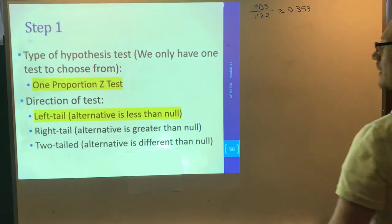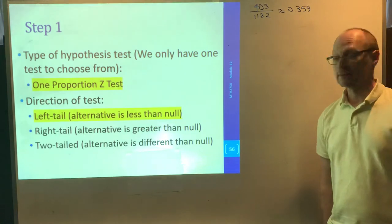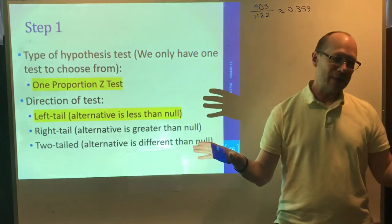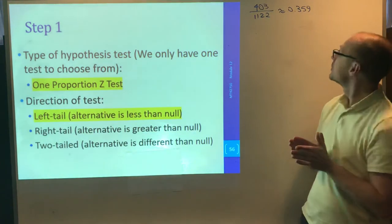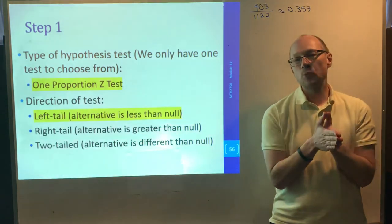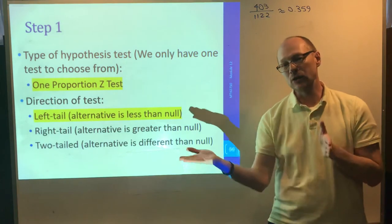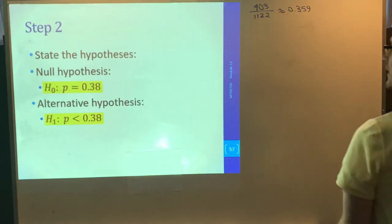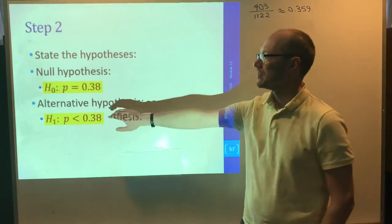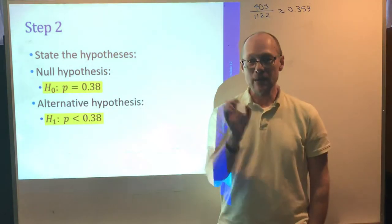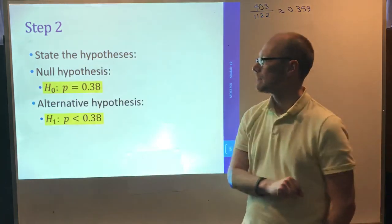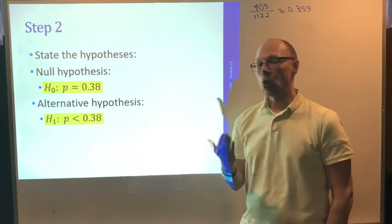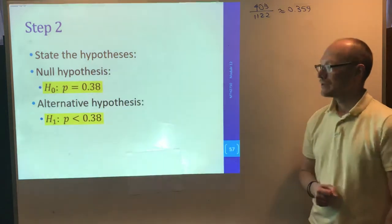Step number one, and I've got some things highlighted so you can see what the right answers are as you go. What type of test are we using? We only have one test to choose from. It's the one proportion Z test. What is the direction of the test? Because the researcher is wondering, has the proportion decreased? Then we're looking at things on the lower side. So this is going to be a left tail test where the alternative is less than the null.